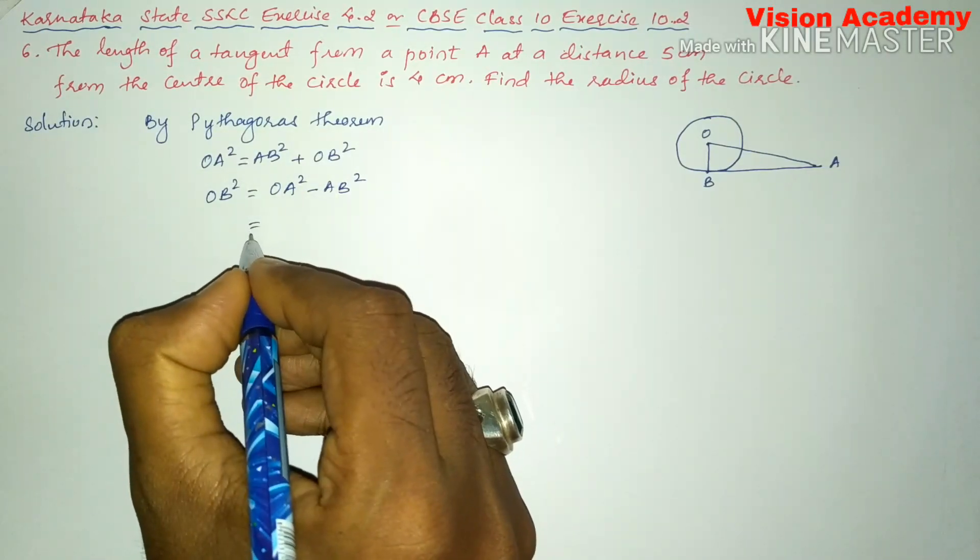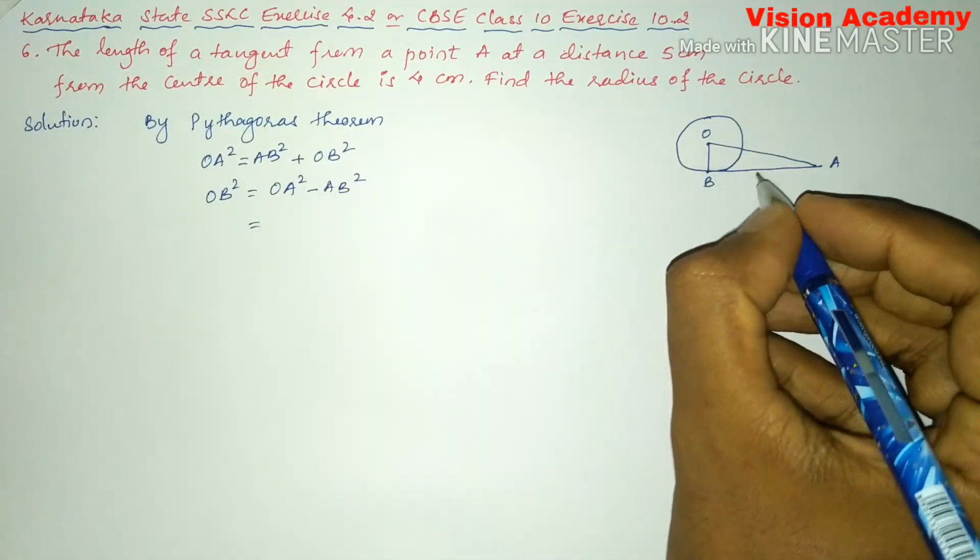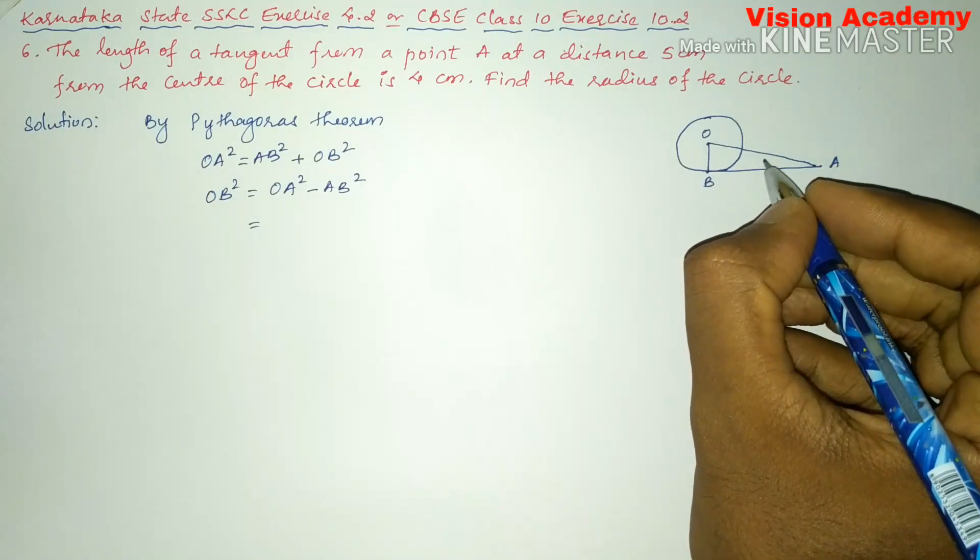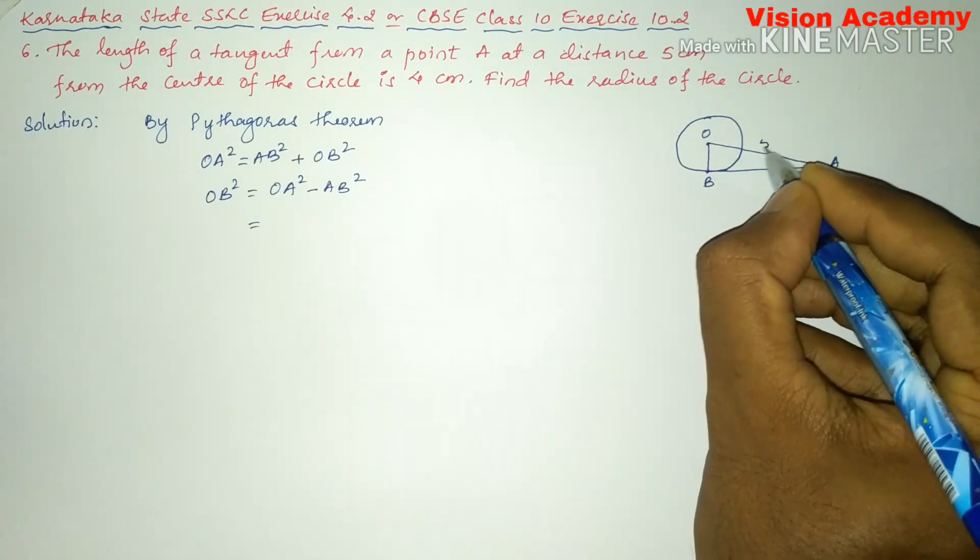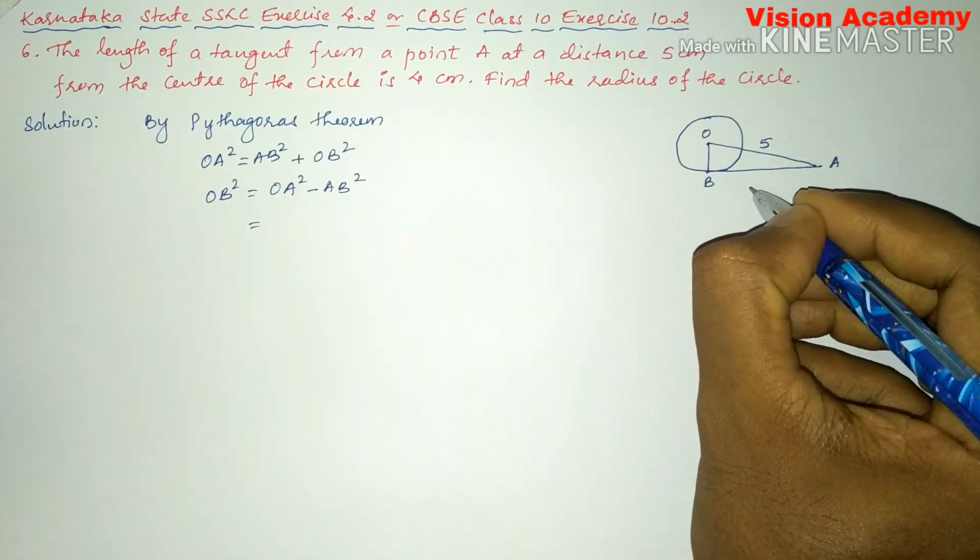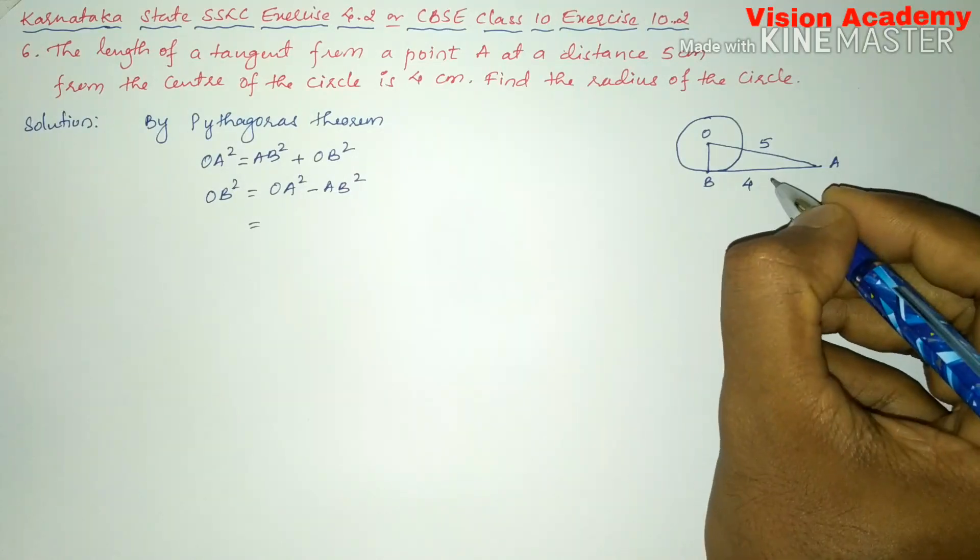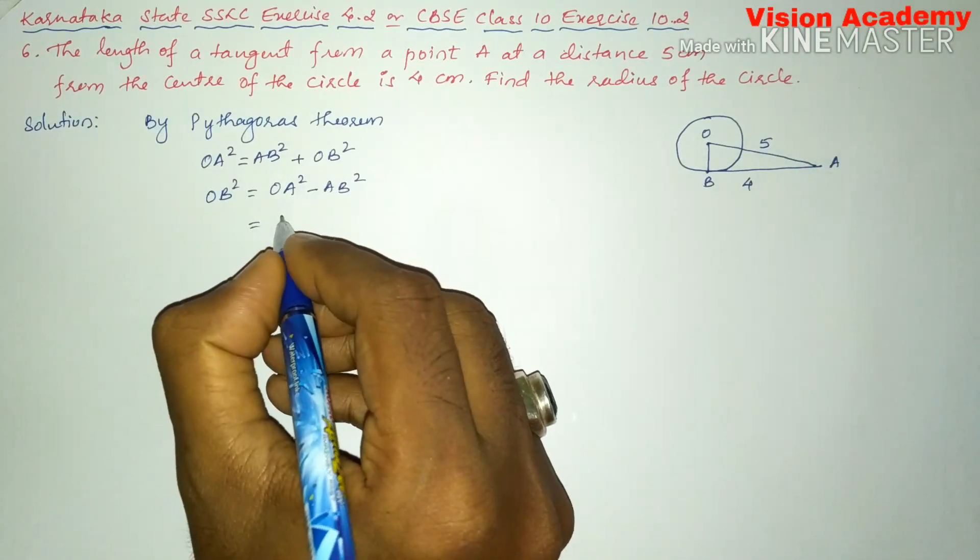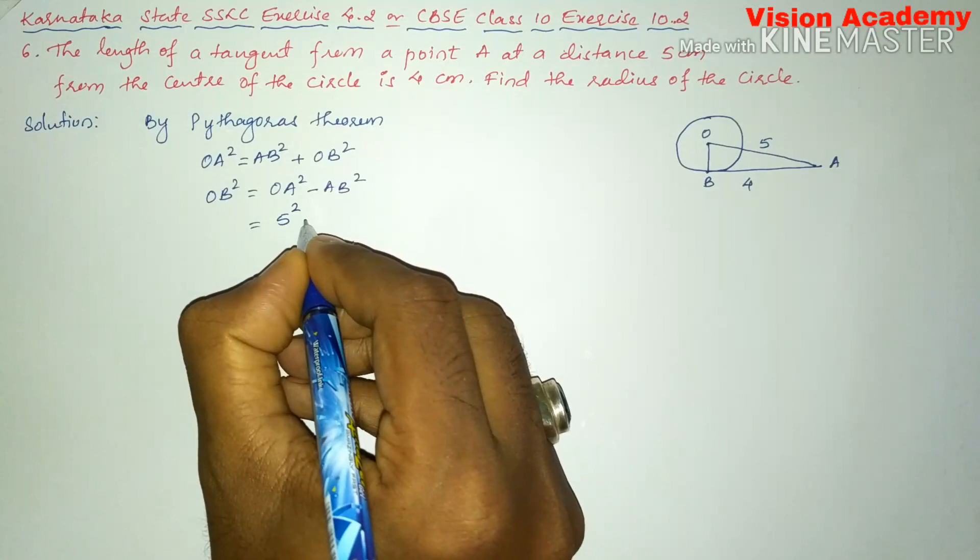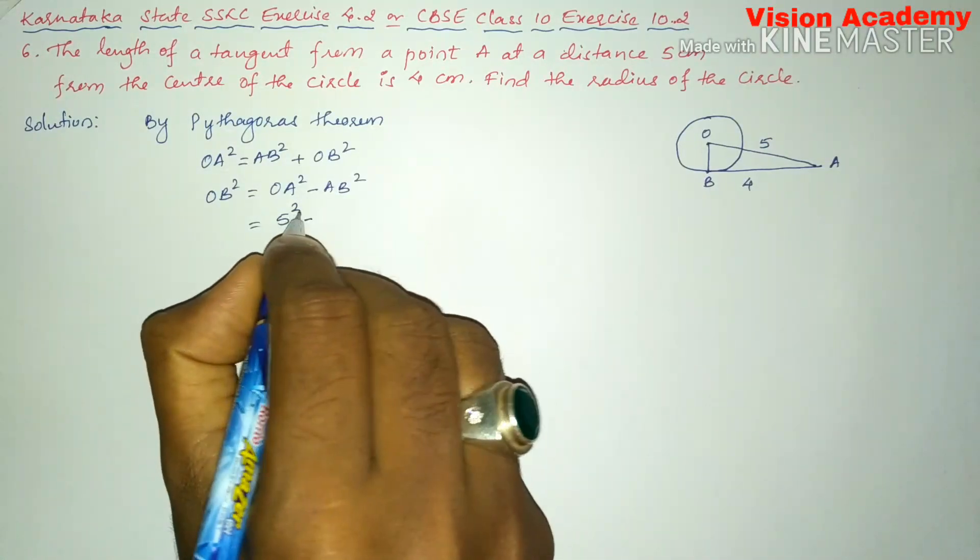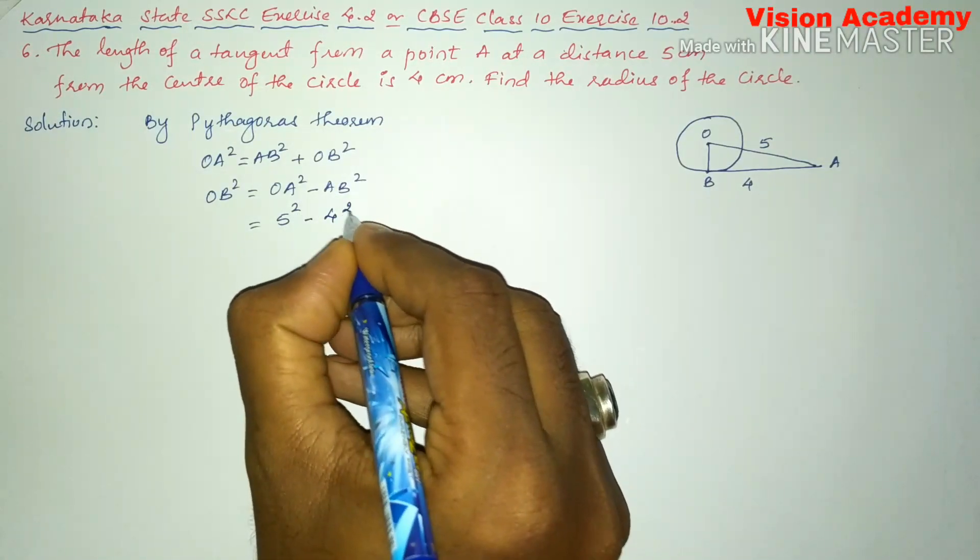So, here OA is 5 centimeter and AB is 4 centimeter. OA square is 5 square minus AB square is 4 square.